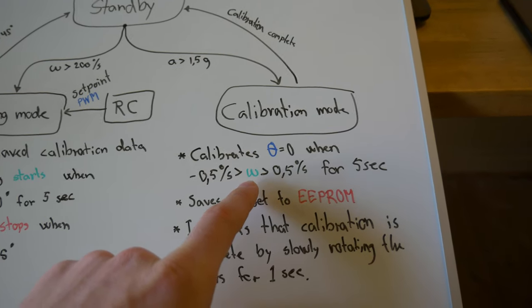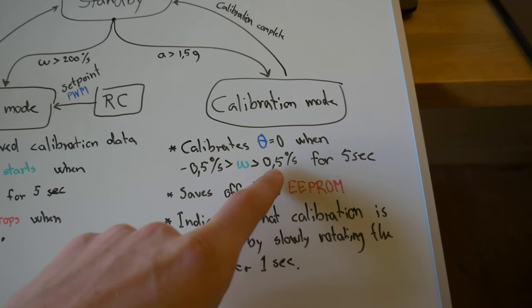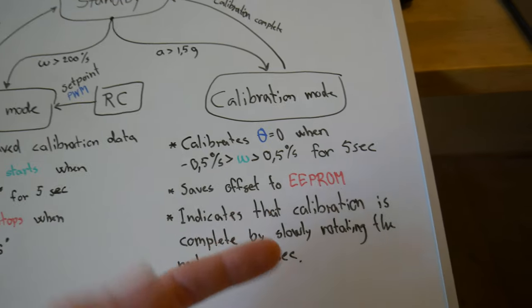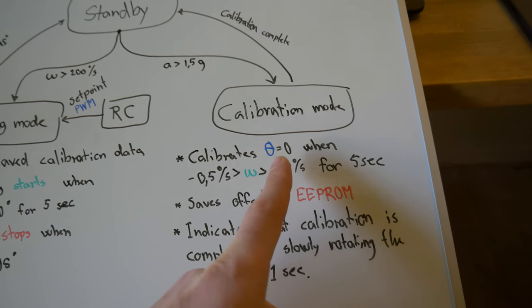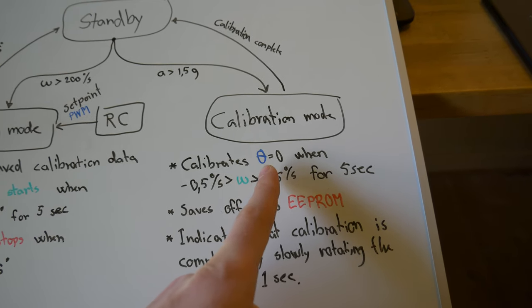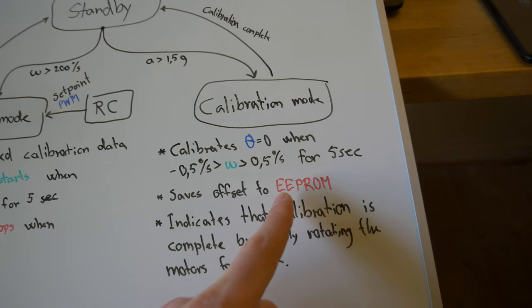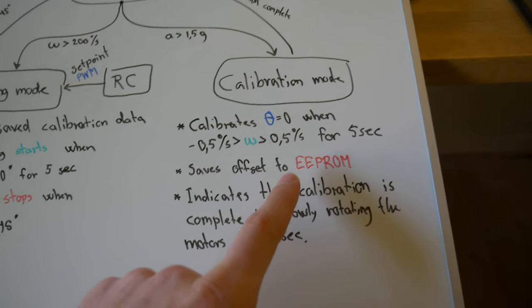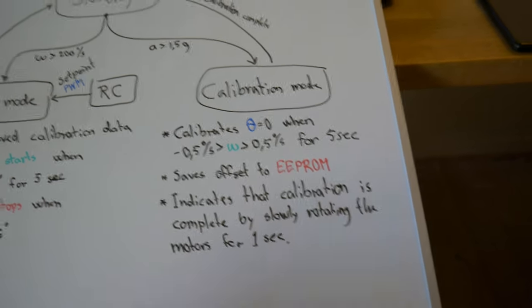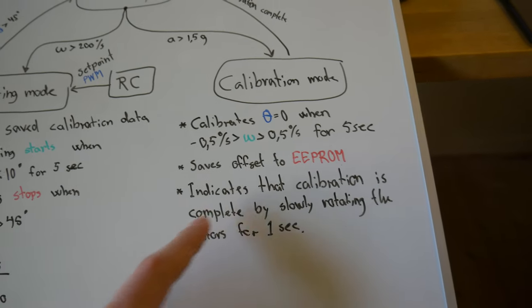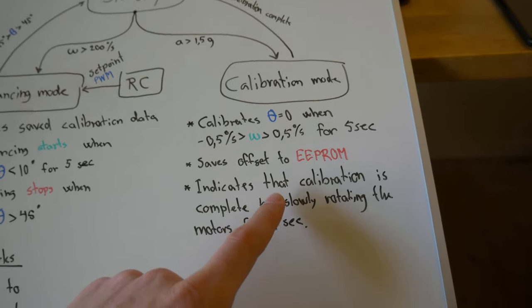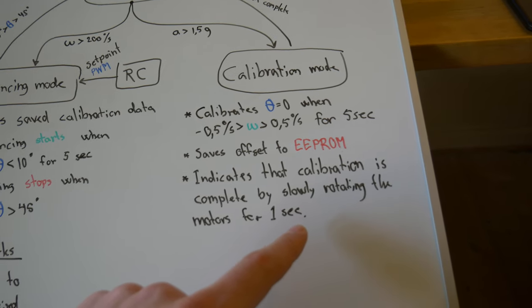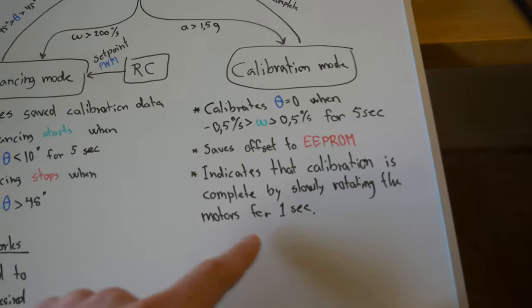Here it's going to look for this scenario. When the angular velocity is below plus or minus 0.5 degrees per second for five seconds, then it's going to calibrate the absolute angle to zero. It's going to save it to the EEPROM, which is some memory that you can access after you have turned on and off the Arduino.